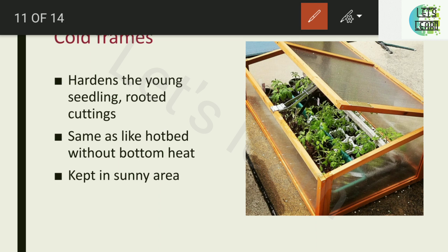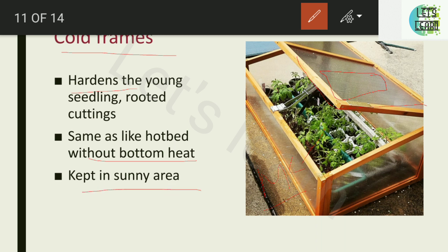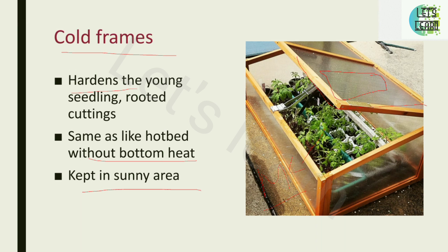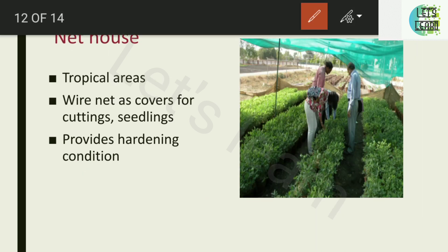The next structure is the cold frame. It mainly hardens the seedlings or rooted cuttings — meaning it prepares the plant to be transplanted to the main field. The cold frame is similar to the hot bed; the framework is made of steel and covered with glass. The only difference is that the cold frame has no bottom heat, unlike the hot bed. It should be kept in a sunny area.